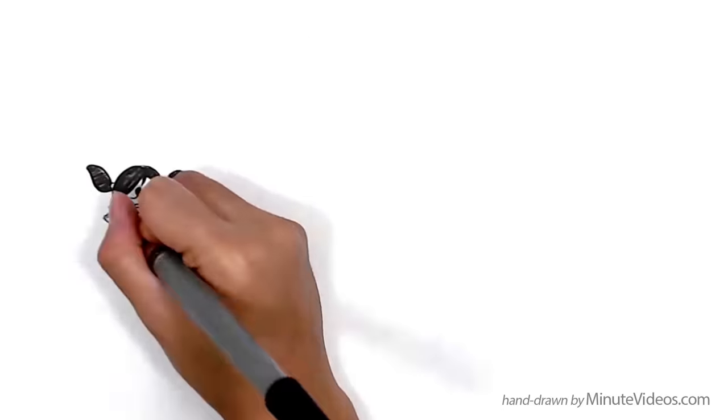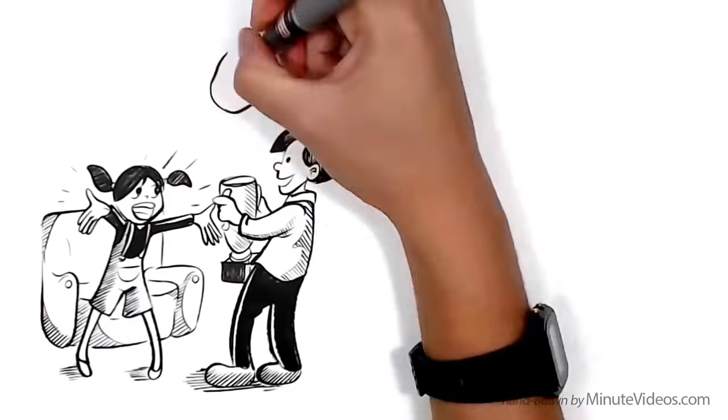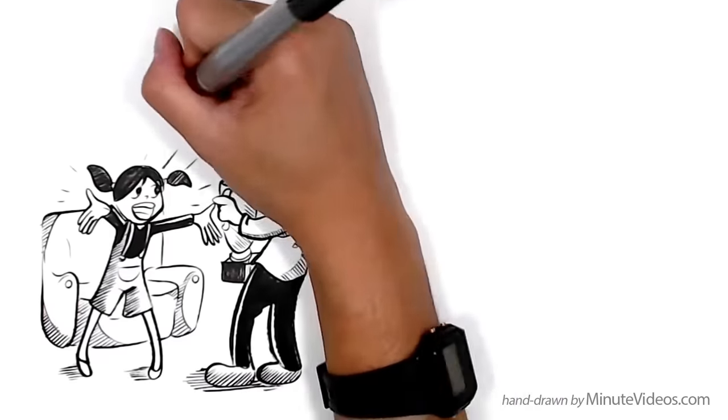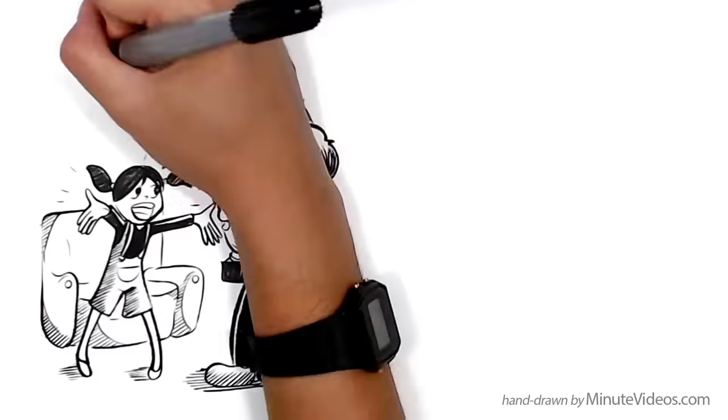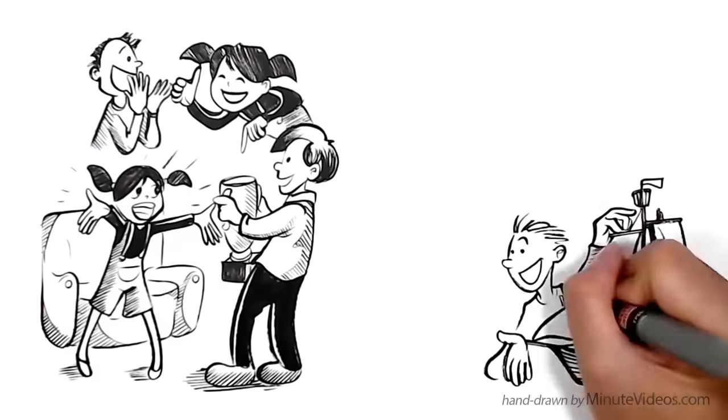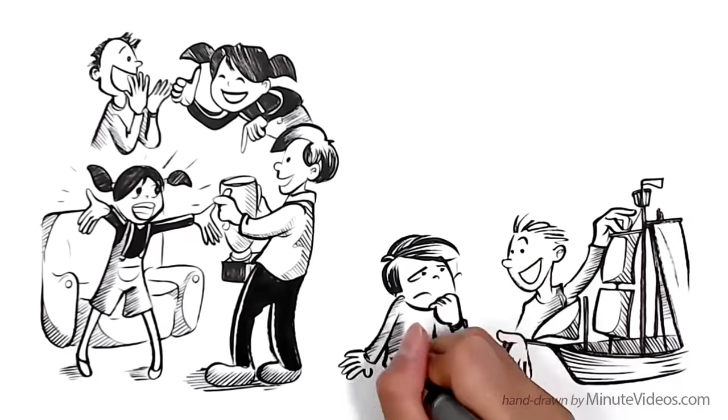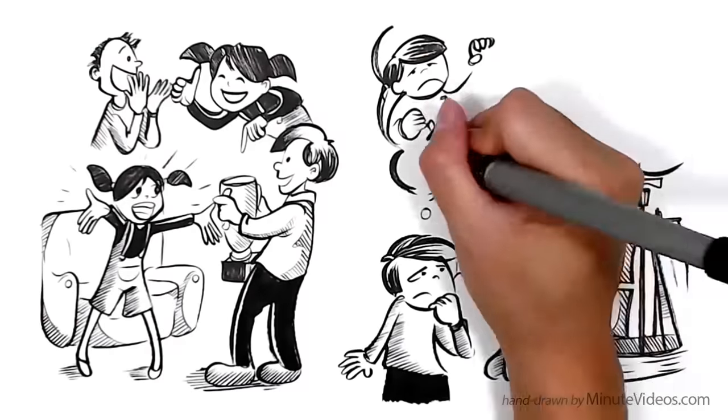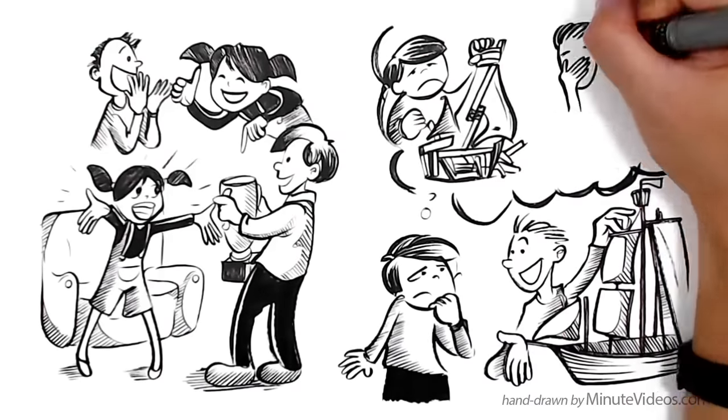Ann likes to see others succeed. It inspires her. She knows that if she motivates her friends to get better, she herself is likely to grow too. If his friends try new things and succeed, Jay feels threatened. He's afraid that their success will put pressure on him to do more with his life too.